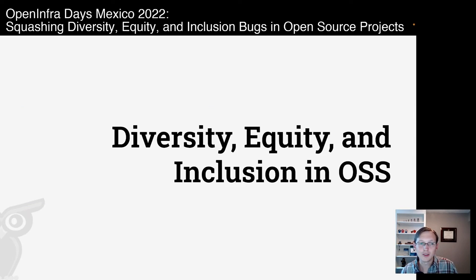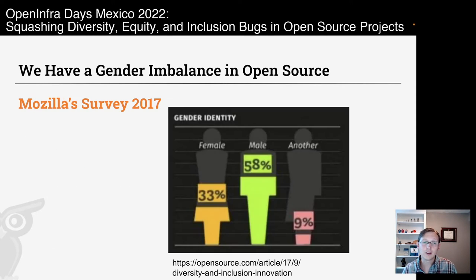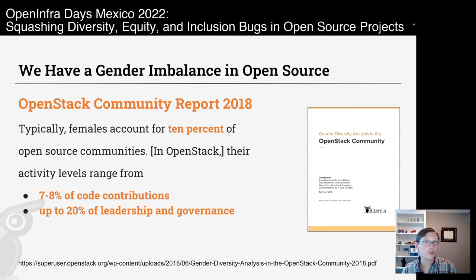If we back up and look at diversity, equity, and inclusion in open source, this is a big topic that has got a lot of attention over the last five years. In 2017, a GitHub survey showed that 95% of respondents were men — a huge gender imbalance. Mozilla had a better ratio: 58% men, 33% women, and 9% who identified differently. And even in an OpenInfra project — OpenStack — a 2018 report showed that 10% identified as women, so 90% as men and others.